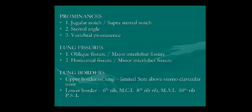Lung fissures include the oblique fissure (major) and the horizontal fissure (minor). The oblique fissure starts from the second thoracic spine posteriorly and extends obliquely downwards and forwards to the sixth costochondral junction anteriorly. The horizontal fissure starts from the right fourth costochondral junction and passes horizontally to meet the oblique fissure in the mid axillary line — it is present only on the right side. On the left, above the oblique fissure is the upper lobe, below is the lower lobe. On the right, above the horizontal fissure is the upper lobe, between the two fissures is the middle lobe, and below the oblique fissure is the lower lobe.